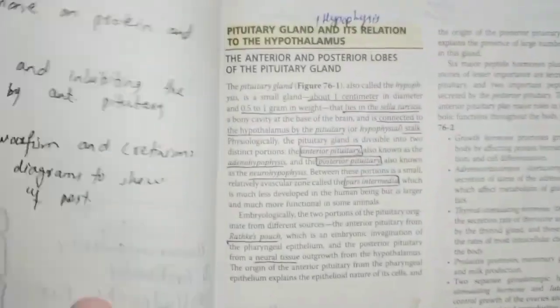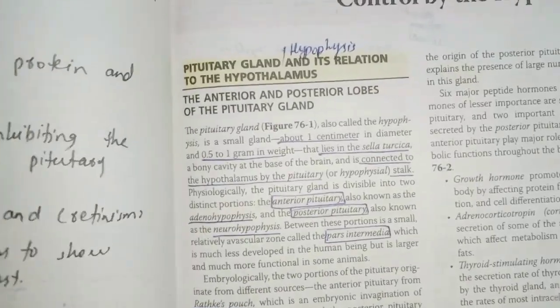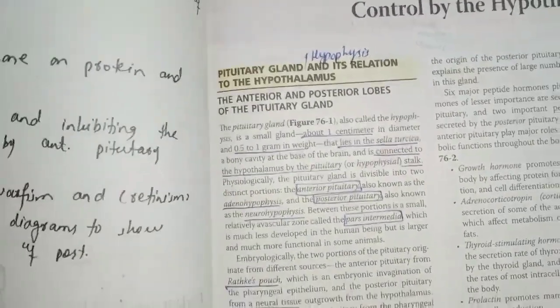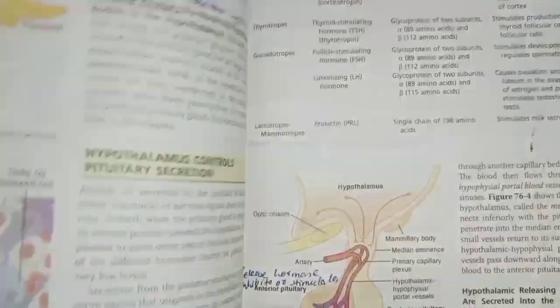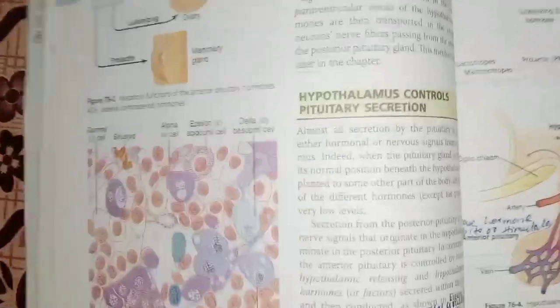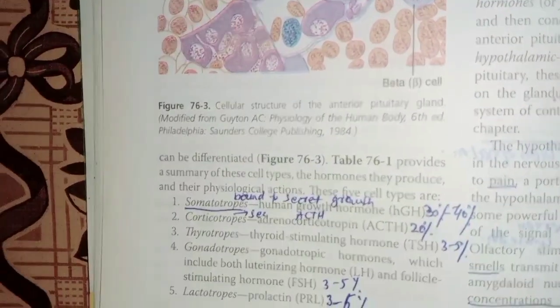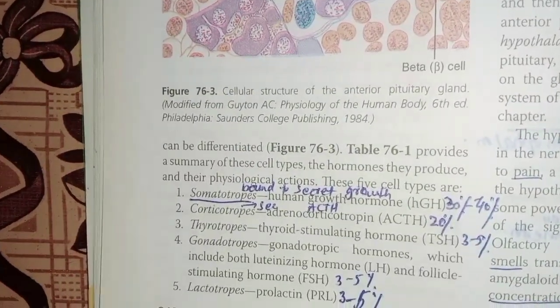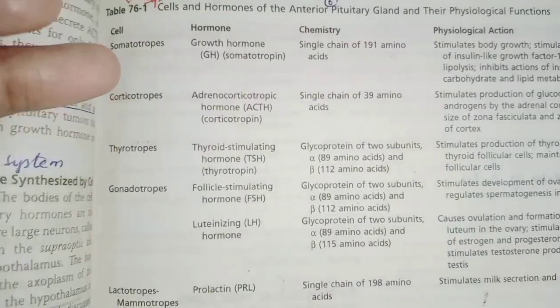Start with the first page. Tell us about what you have to know about the hypophysis and the pituitary gland. First, you have to read the chapter. After reading the chapter, I will tell you about the table. Just read the table.